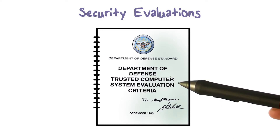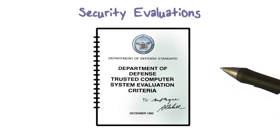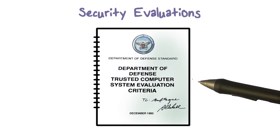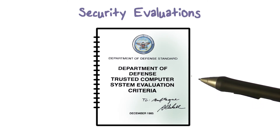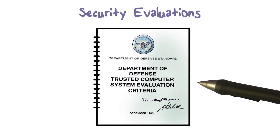How do you establish how trustworthy — the level of assurance, level of trust — that you can associate with a given system? They actually came up with a Trusted Computer System Evaluation Criteria. This is work that goes back to the 1980s, and it is called the Orange Book, or TCSEC — Trusted Computer Systems Evaluation Criteria.